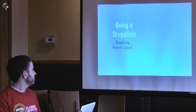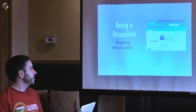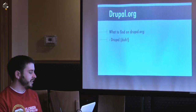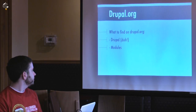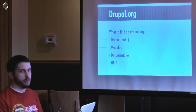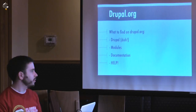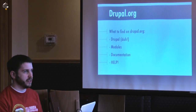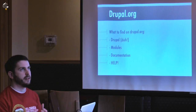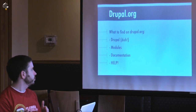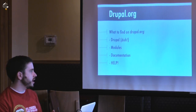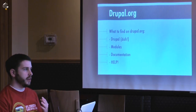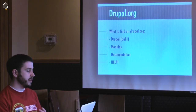What does it take to be a Drupalista? Drupal.org — know it and love it. The root and heart of Drupal is on Drupal.org. That's where you find Drupal itself, all of your modules, and documentation and help for your Drupal problems — which you will have at some point. Drupal.org is basically the community site; it's where everything is distributed from officially. All the official code, modules, and everything live on Drupal.org. Most of the documentation for individual modules, core Drupal, how-tos, and frequently asked questions are all there.